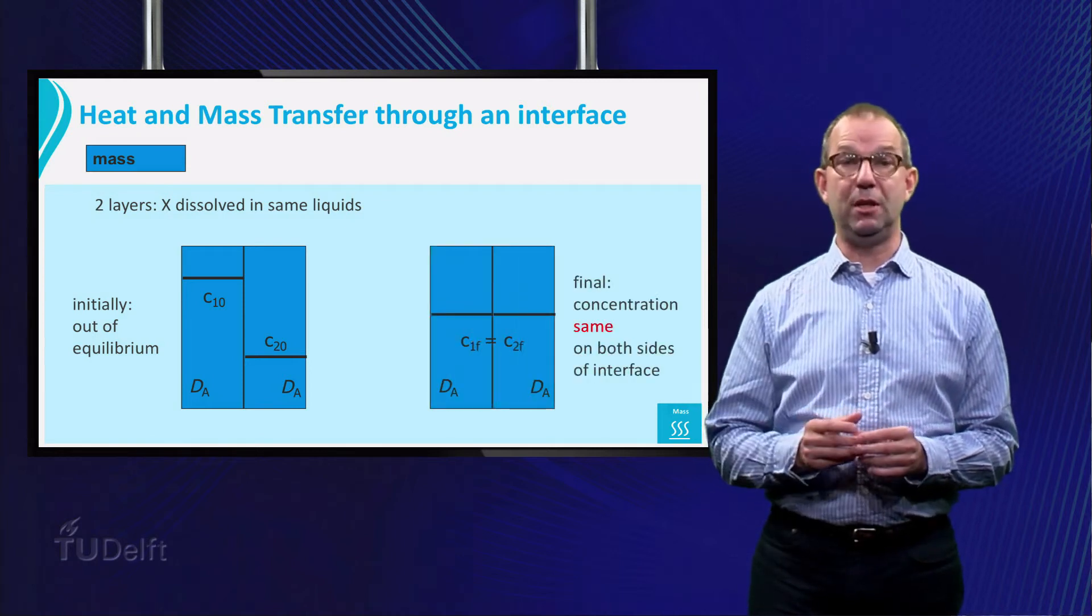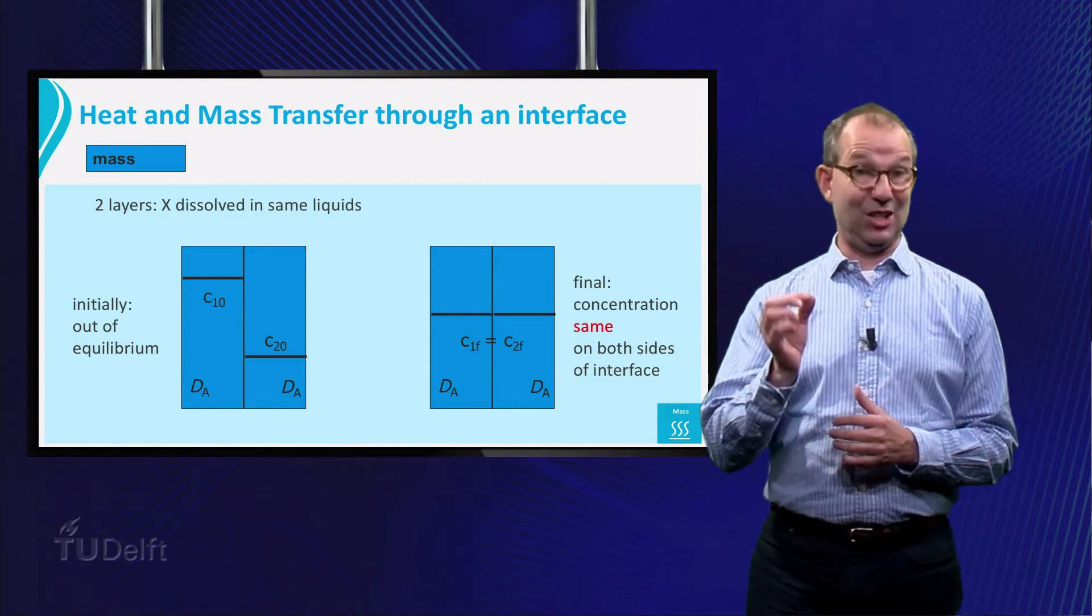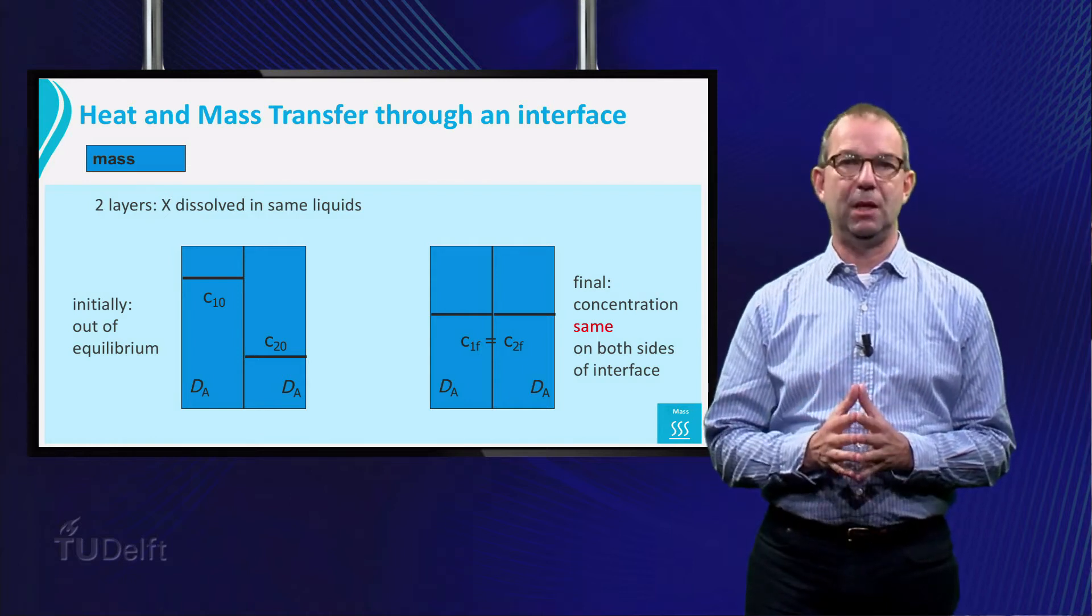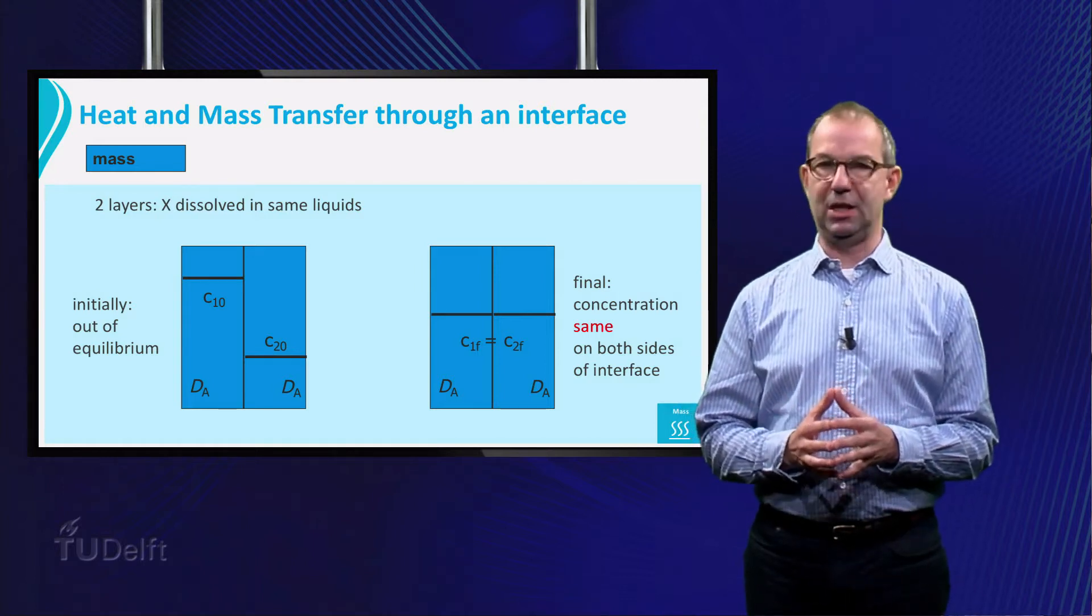Well, based on symmetry we expect that in the long run the concentration of X is the same in both layers. Then the driving force has disappeared and no mass transport takes place anymore.